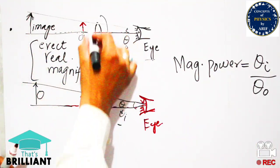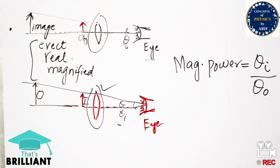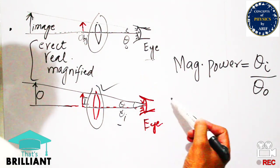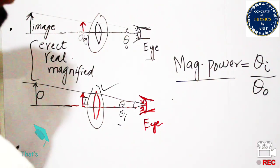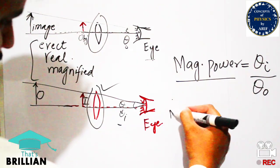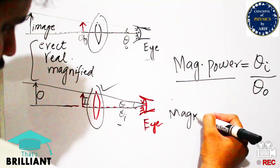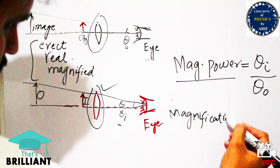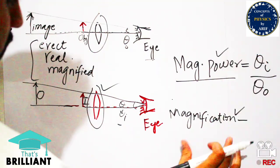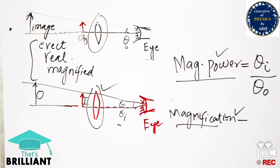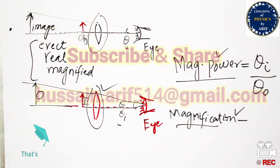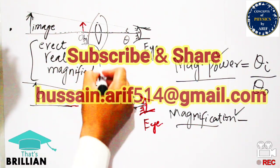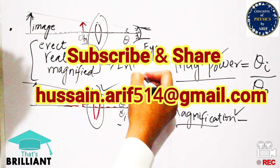The magnifying power has a formula: the ratio of the angle of the image (theta_i) to the angle of the object (theta_o). This magnifying power is helpful in understanding the location and representation of the image and object. Magnifying power is a ratio of theta_i over theta_o, and it is an effective component related to optical instruments.